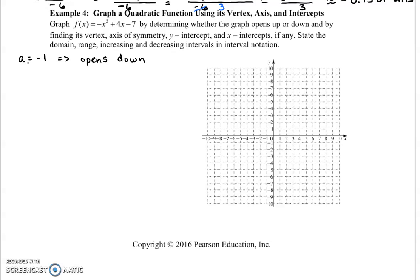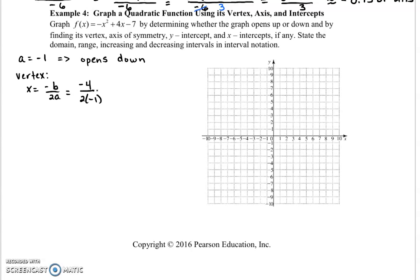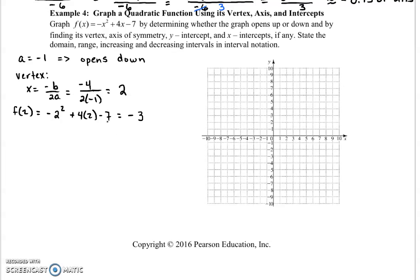For the vertex, the x-coordinate is negative b over 2a. So we have negative 4 over 2 times negative 1, which is a positive 2. If we plug that in to the equation, we get negative 2 squared plus 4 times 2 minus 7, which is negative 4 plus 8 minus 7. And then that seems like a negative 3 to me, I think. Yes, negative 3. So our vertex is at the point 2, negative 3.